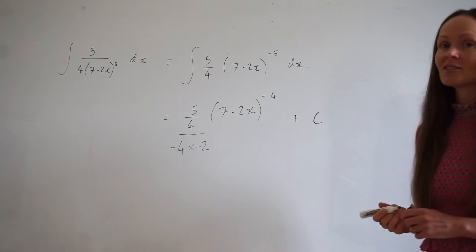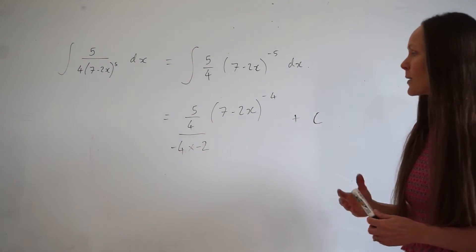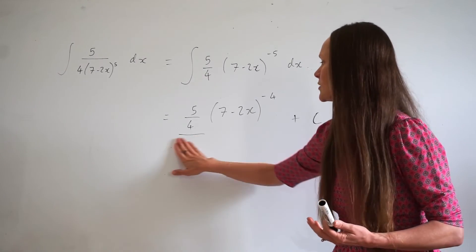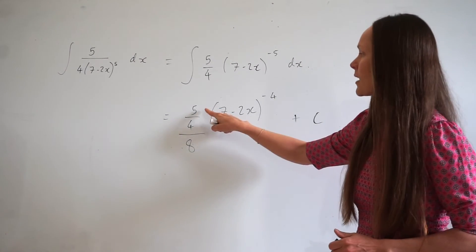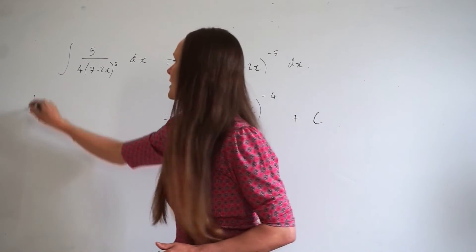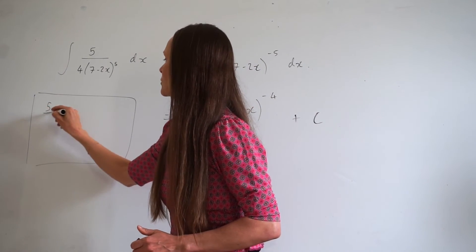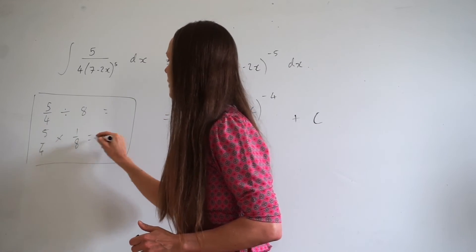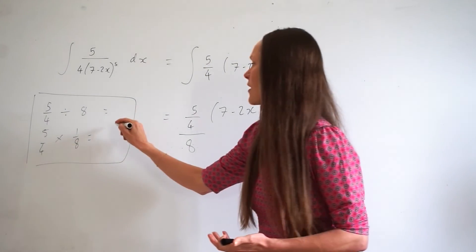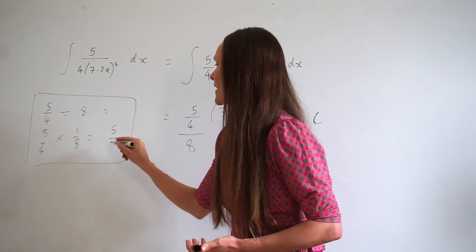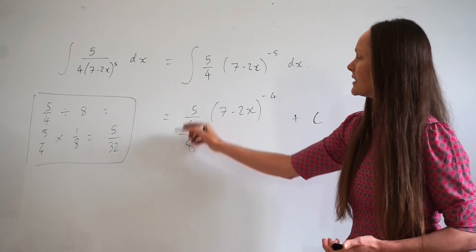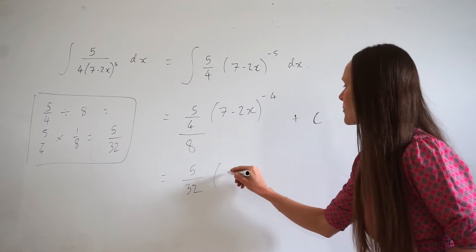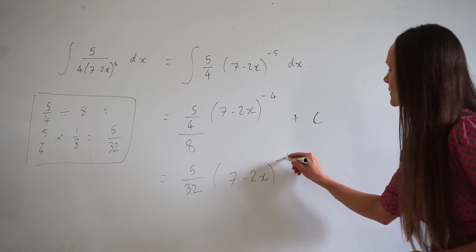Don't forget to add your constant of integration c. To get full marks, simplify all the way. Negative 4 multiplied by negative 2 is positive 8, so you write 8 underneath. Then work out 5 quarters divided by 8, which is the same as 5 quarters multiplied by 1 over 8. That gives 5 over 32. So the final answer is 5 over 32 times (7 minus 2x) raised to the power of negative 4, plus c.